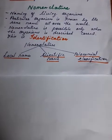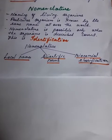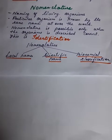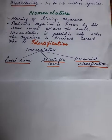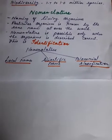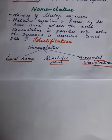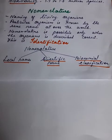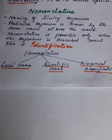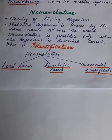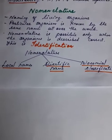How do we identify this diversity of living organisms in the world? This is where nomenclature comes in. What is nomenclature? It is the naming of living organisms so that a particular organism is known by the same name all over the world. Nomenclature is possible only when the organism is correctly described by scientists.